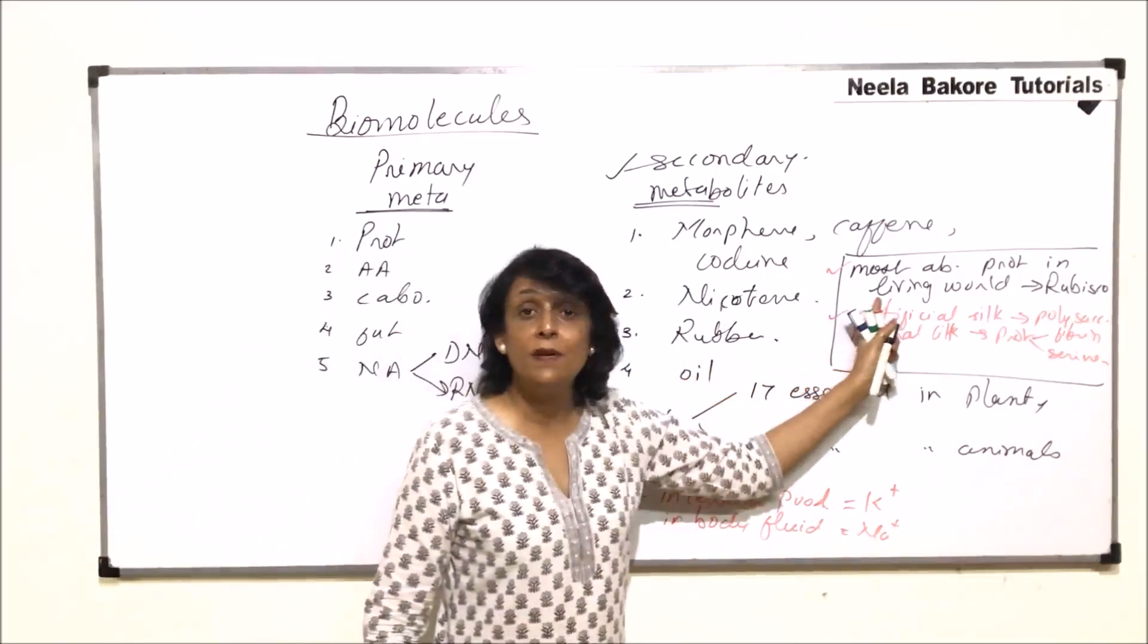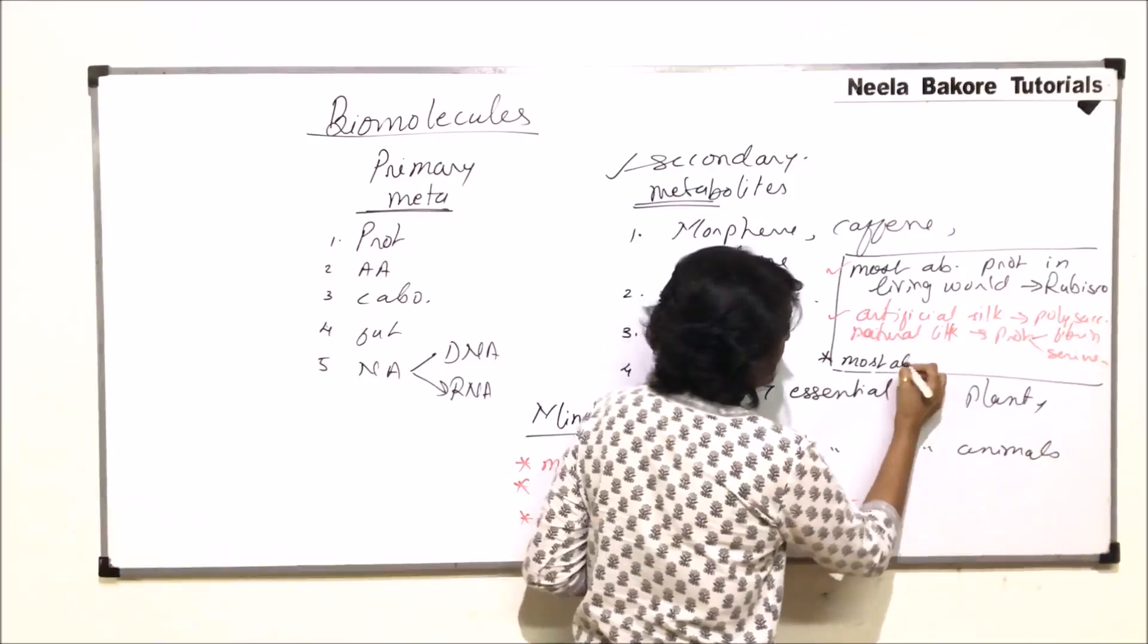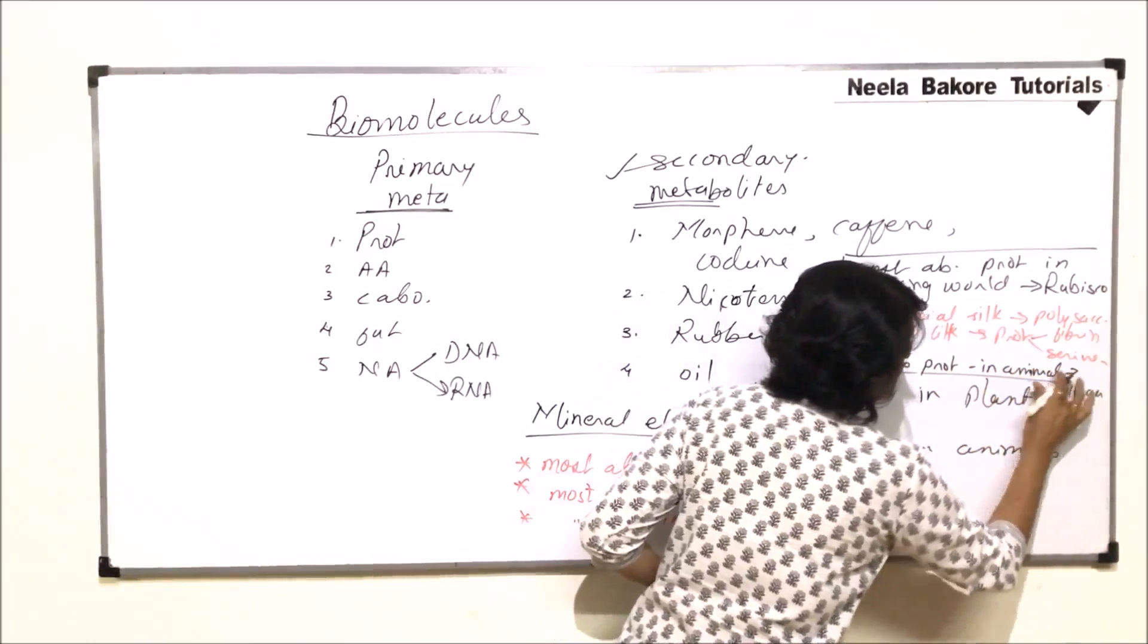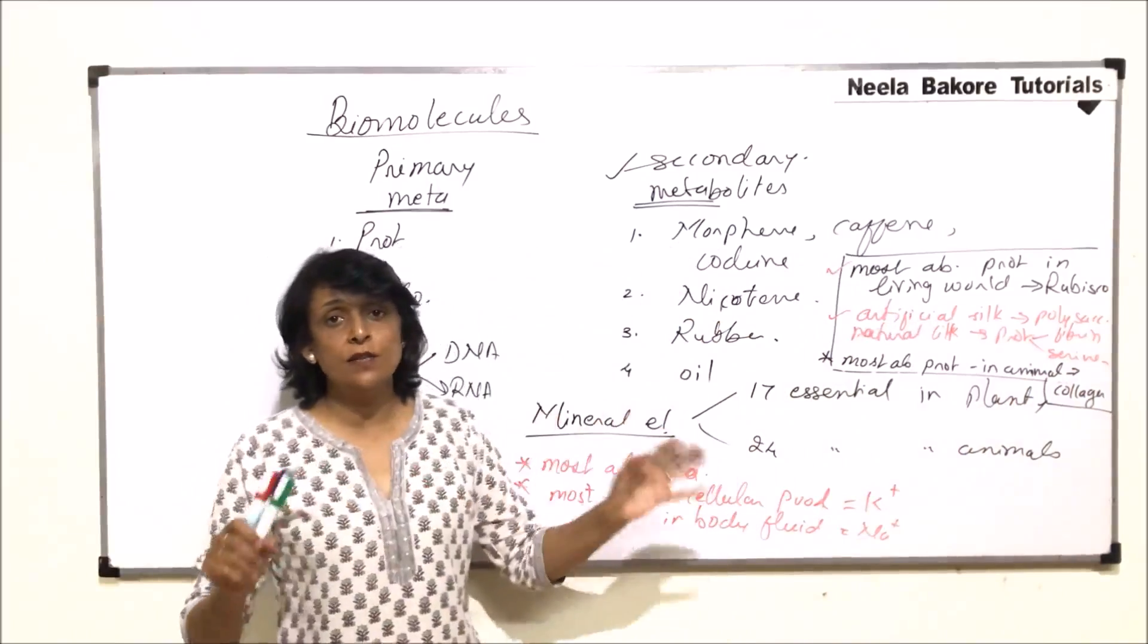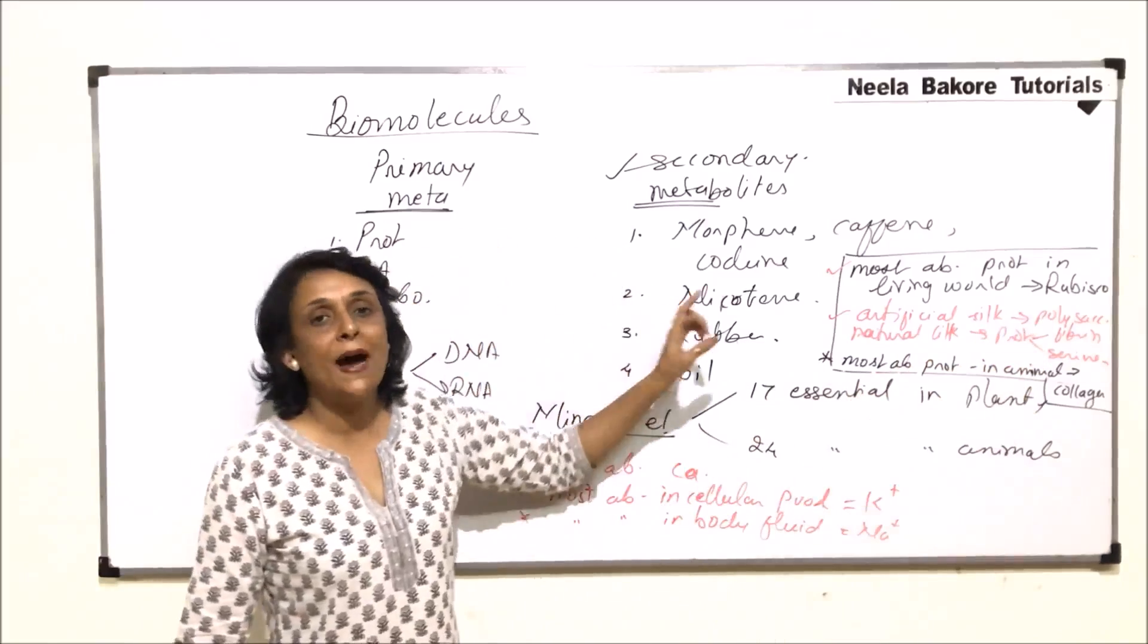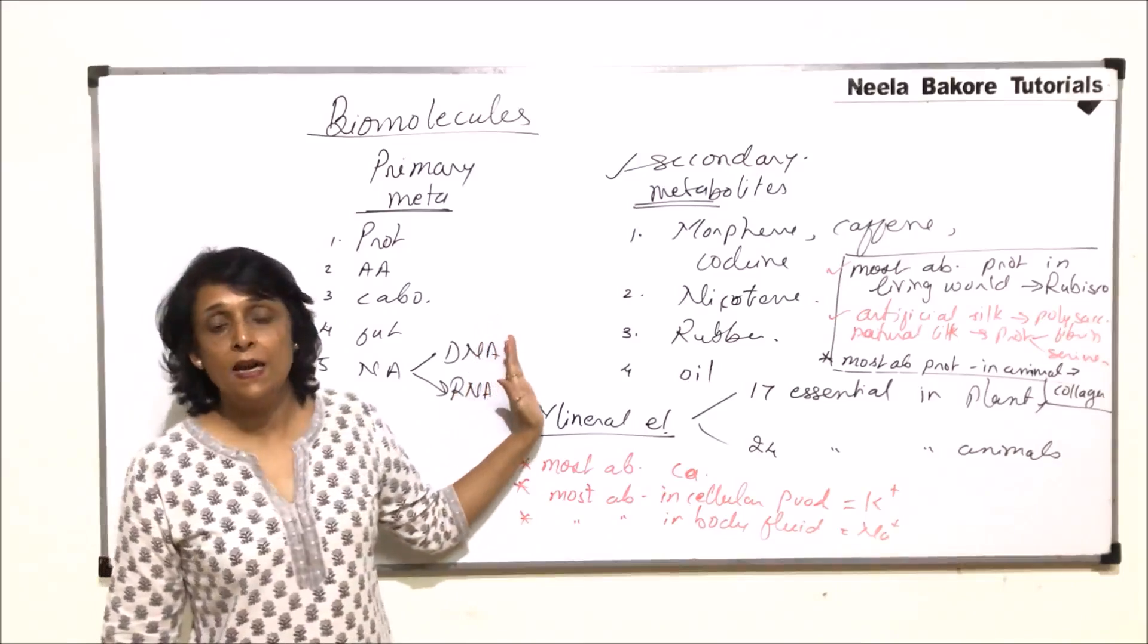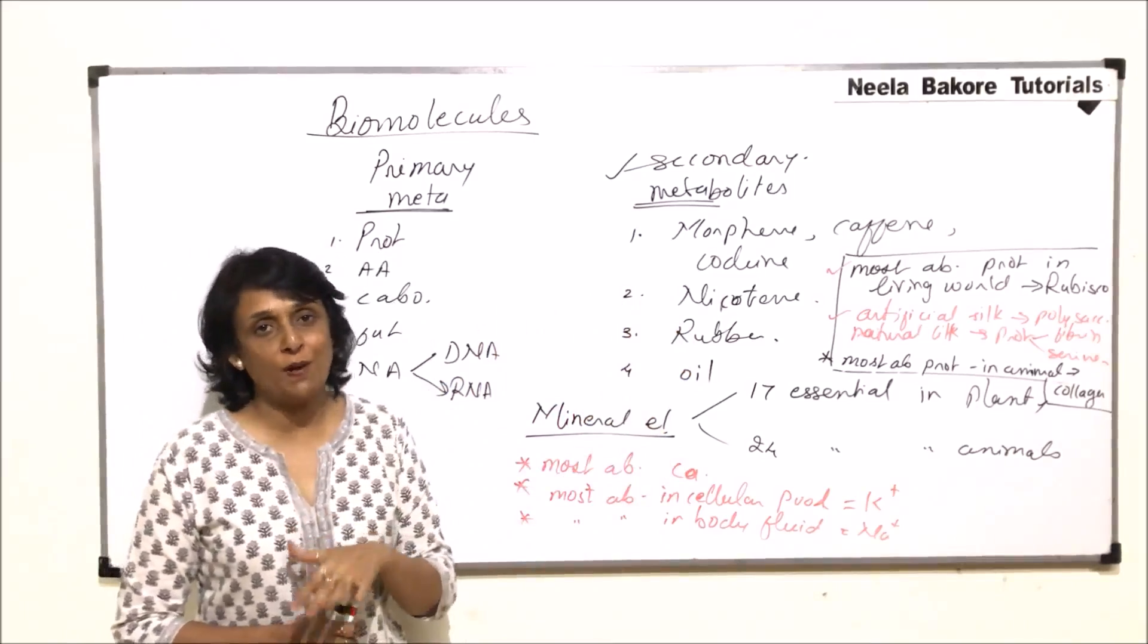If we talk of most abundant protein in animals, then it is collagen. Collagen which is in the tissues is the most abundant protein amongst the animals. But in general, if we are talking about the living world, then it is Rubisco, that is ribulose bisphosphate carboxylase oxygenase, that is the full form of it.